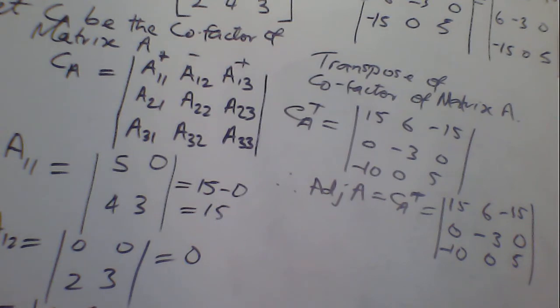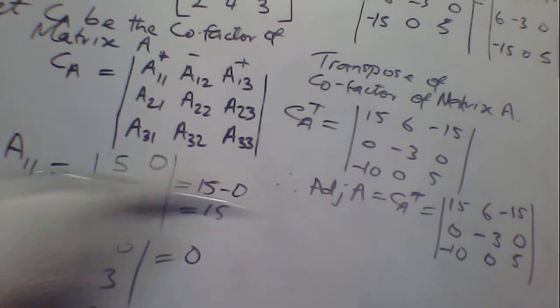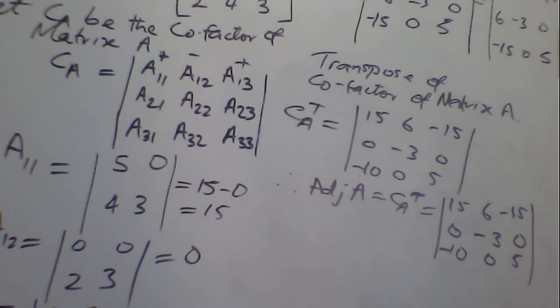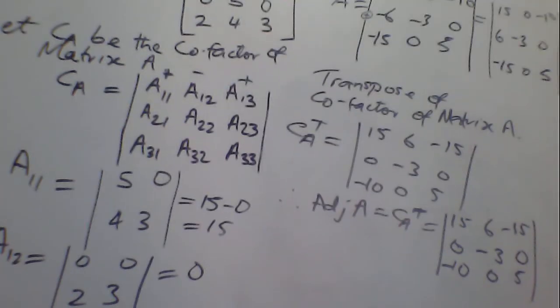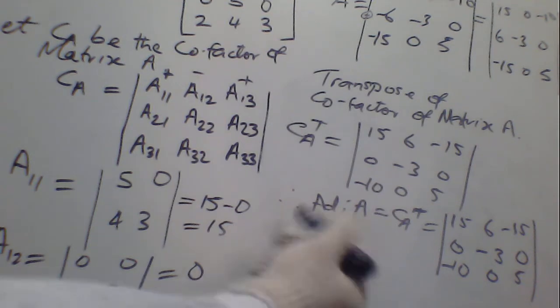So this is where we have to stop today. This is the question you are required to find. You are required to find the adjoint of the matrix A. But if you are asked to find the inverse of matrix A, from this side, we can now find the inverse of matrix A.